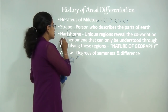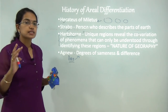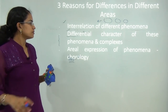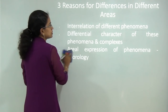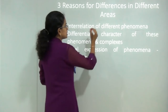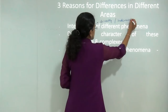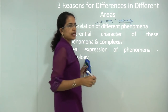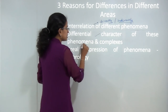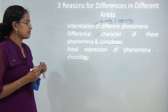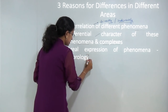When Hartshorne was trying to explain the concept of aerial differentiation, he said there are three primary reasons because of which we can say different areas are different. The first and foremost reason is there is an interrelationship of different phenomena that exist either directly or indirectly. The next is there are differential characteristics of the various phenomena and the complexes that exist on the earth's surface.